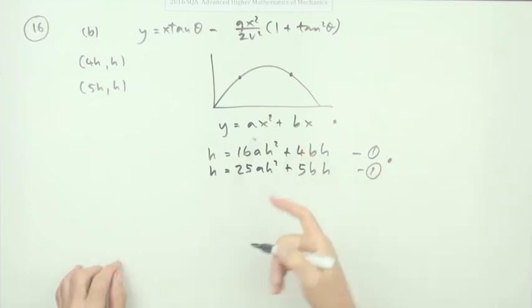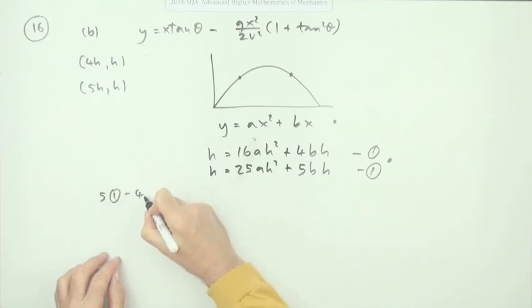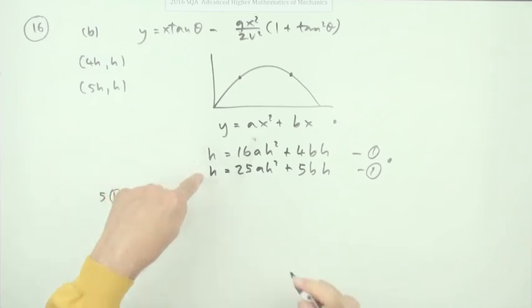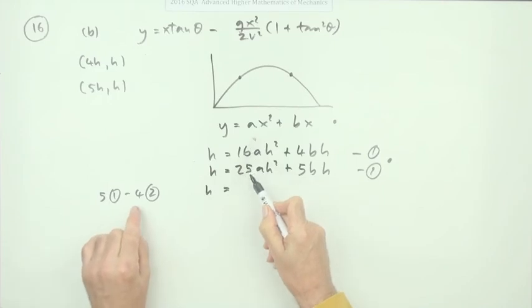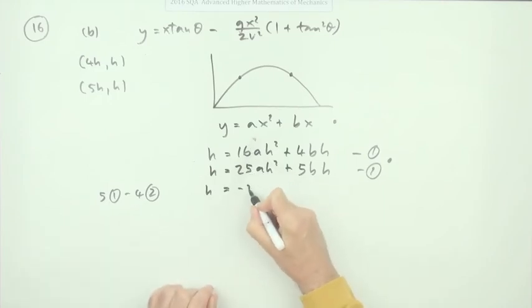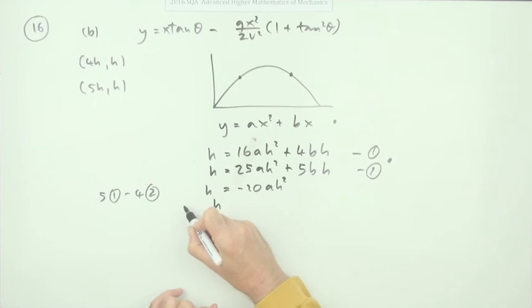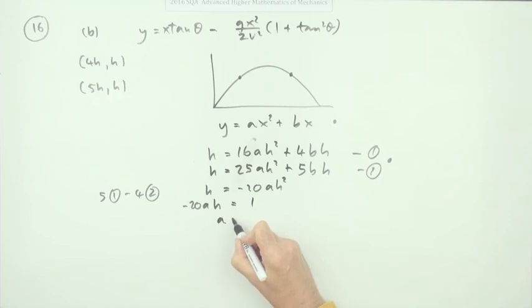If you do 5 of one minus 4 of two, you'd have 5 taken away 4 is still h. 5 of them is 80 take away 100 is minus 20 a h squared and that disappears. Taking that across and dividing, a is going to be 1 over 20h.